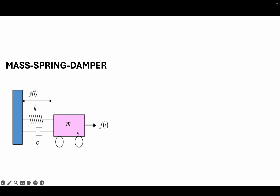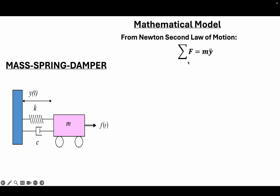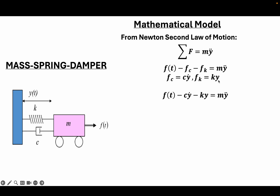This is the mass-spring-damper system whose dynamics we are implementing and simulating in Simulink. It has an external force f(t), a spring, and a damper that generate forces opposing the external force. The displacement of the system is represented by y(t). Using Newton's law of motion, the summation of forces acting on the system is mass times acceleration. Assuming the external force is f(t), the damping force and spring force are negative. The damping force is the damping coefficient times velocity, while the spring force is the spring constant times displacement.